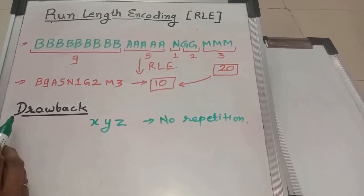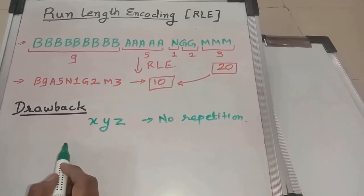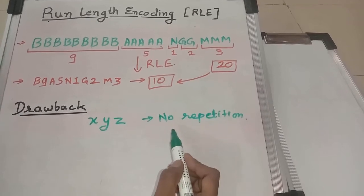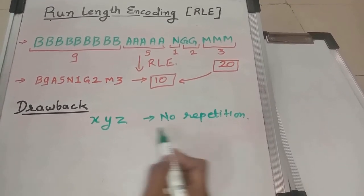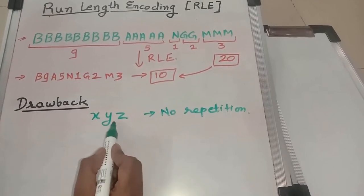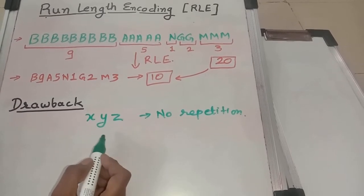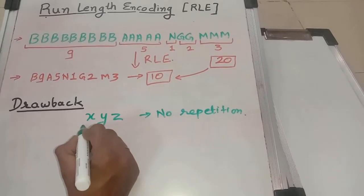Now we will see the drawback of run length encoding. When repetition of symbol is not there in the data, like this symbol xyz where the repetition of data is not there, how we will encode this?